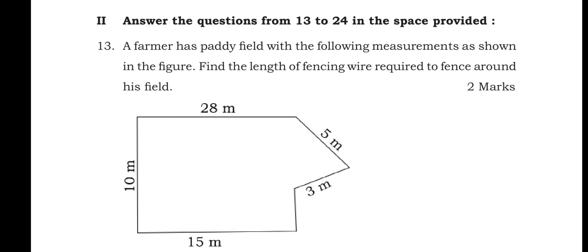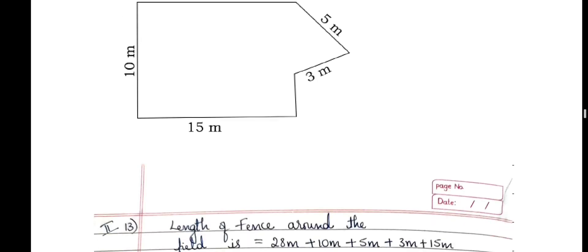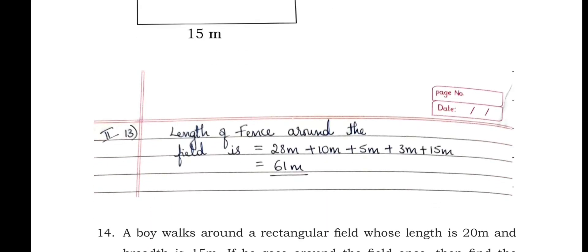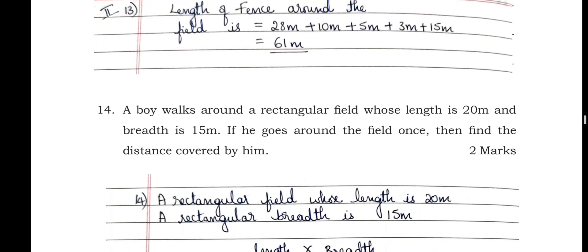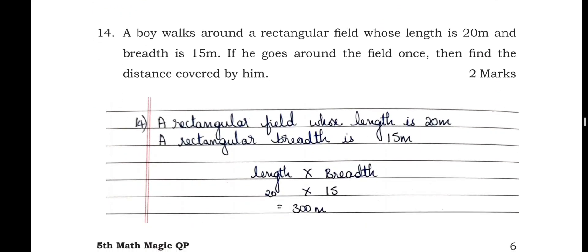Answer the following questions from 13 to 14. A farmer has a paddy field with measurements shown in the figure — find the length of fencing wire required to fence around his field. One side is 5 m, one side is 3 m, one side is 15 m, and one side is 10 m. The total fencing = 28 m + 10 m + 5 m + 3 m + 15 m = 61 meters.